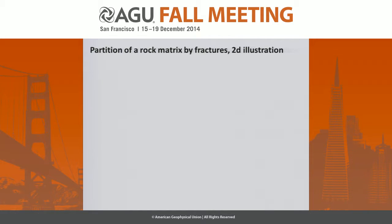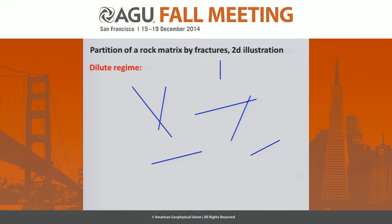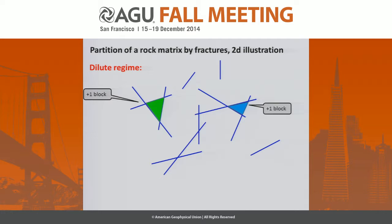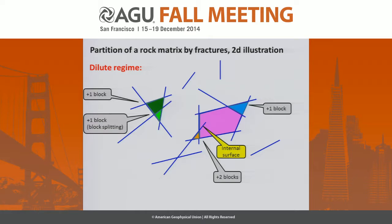I want to illustrate first what I'm going to do. If you have fractures, I'm going to illustrate that in 2D. If you have fractures and you put them in the dilute regime, after a while you start creating blocks. So this is one block, another block, and so on. You may either create block by block splitting, and the block volume fraction is very small with respect to 1.